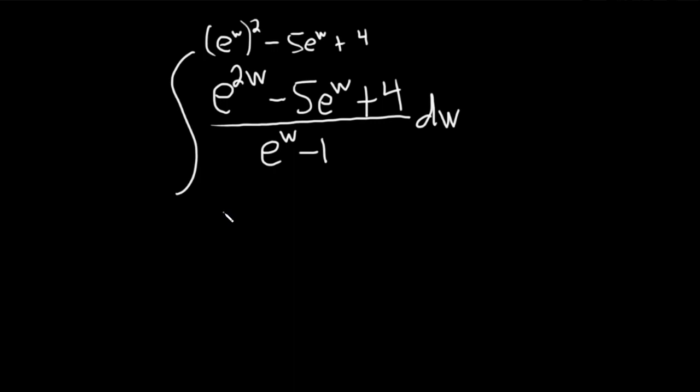So we can factor this. So if we factor, it should look like this: e to the w, parentheses, e to the w, parentheses. And on the bottom we still have the e to the w minus 1, dw.